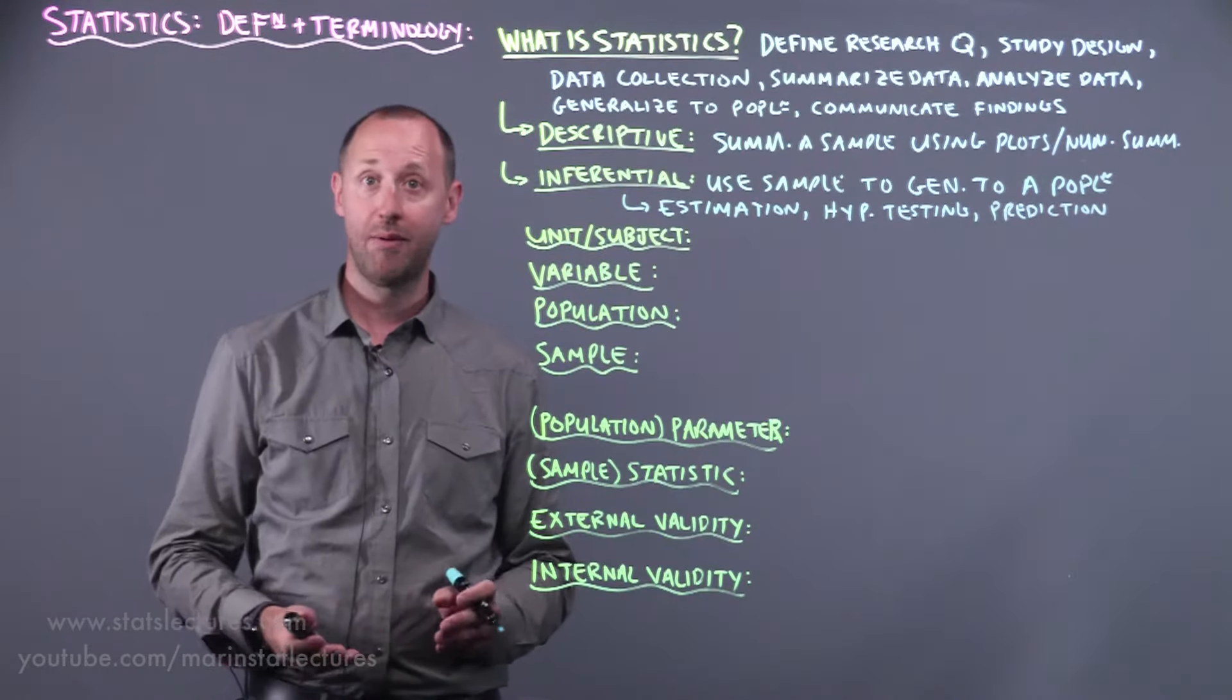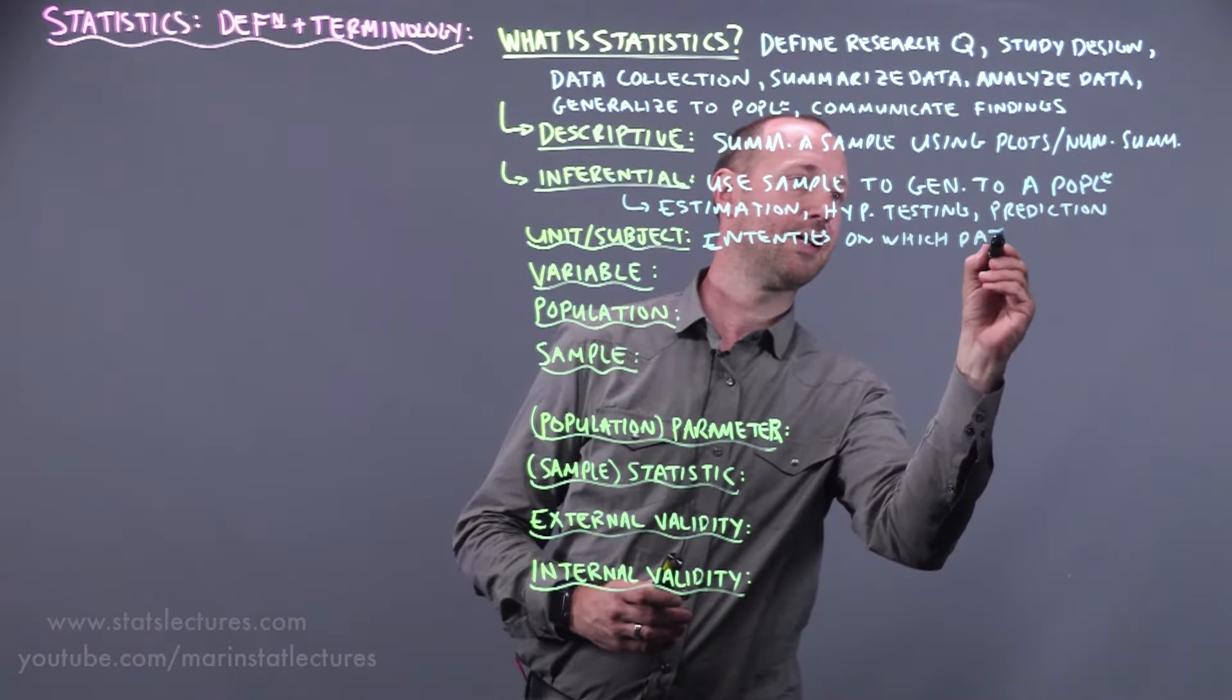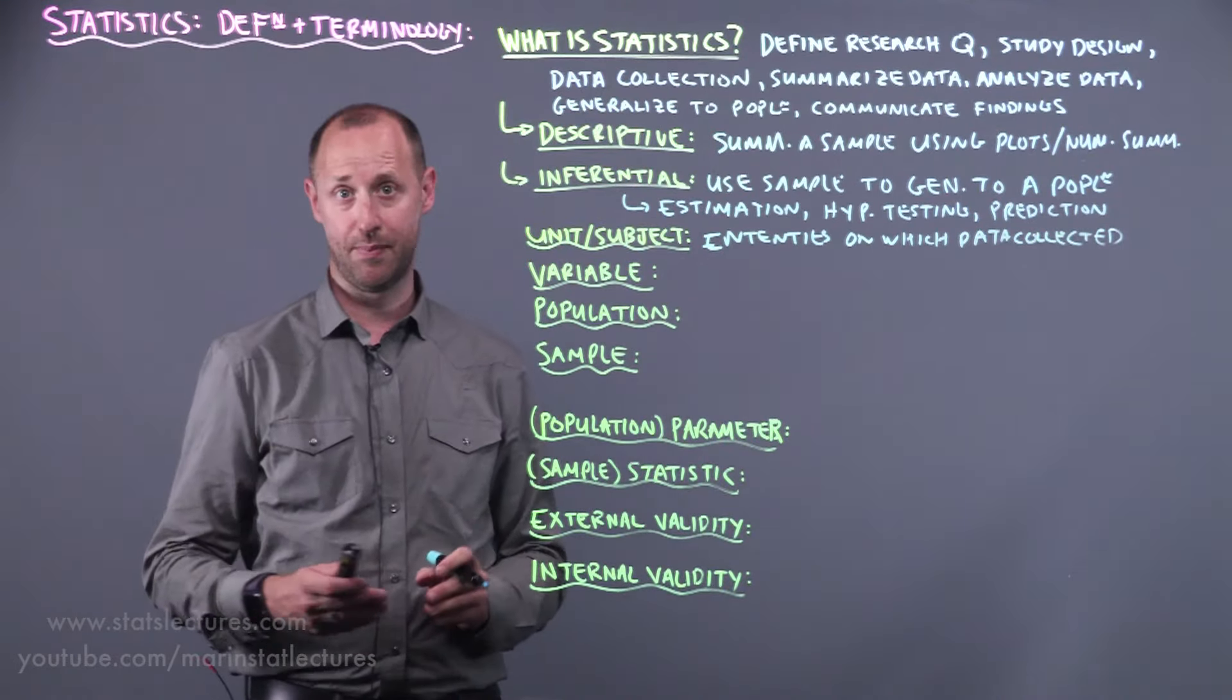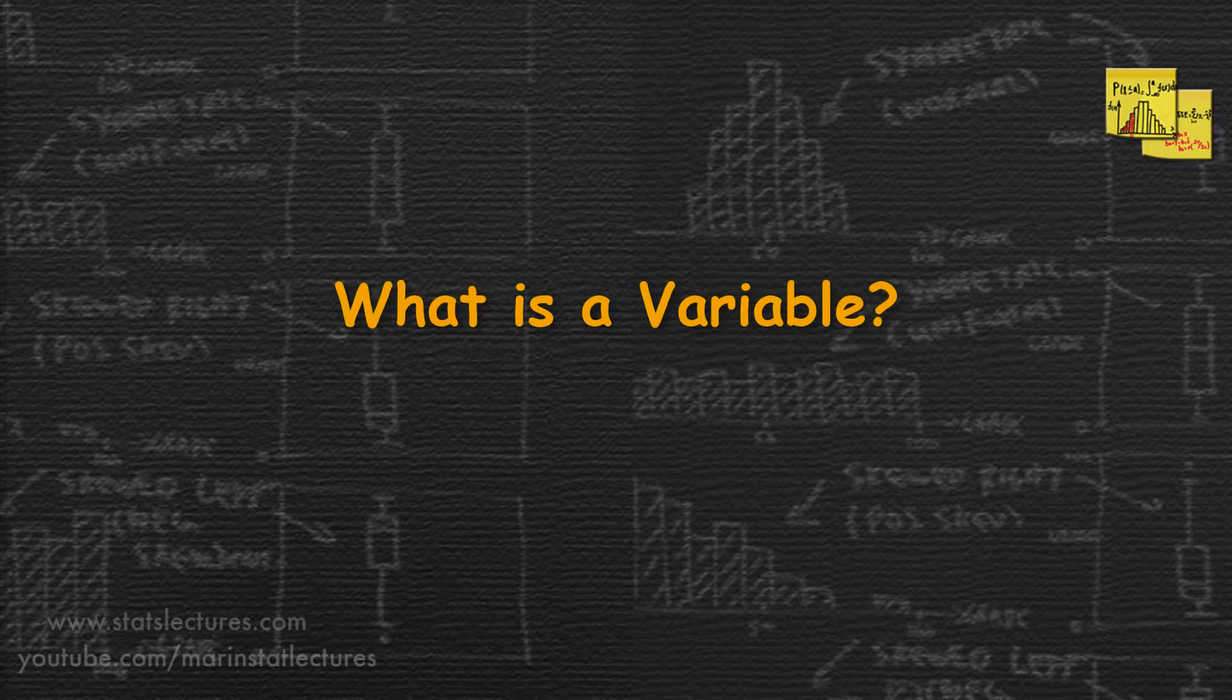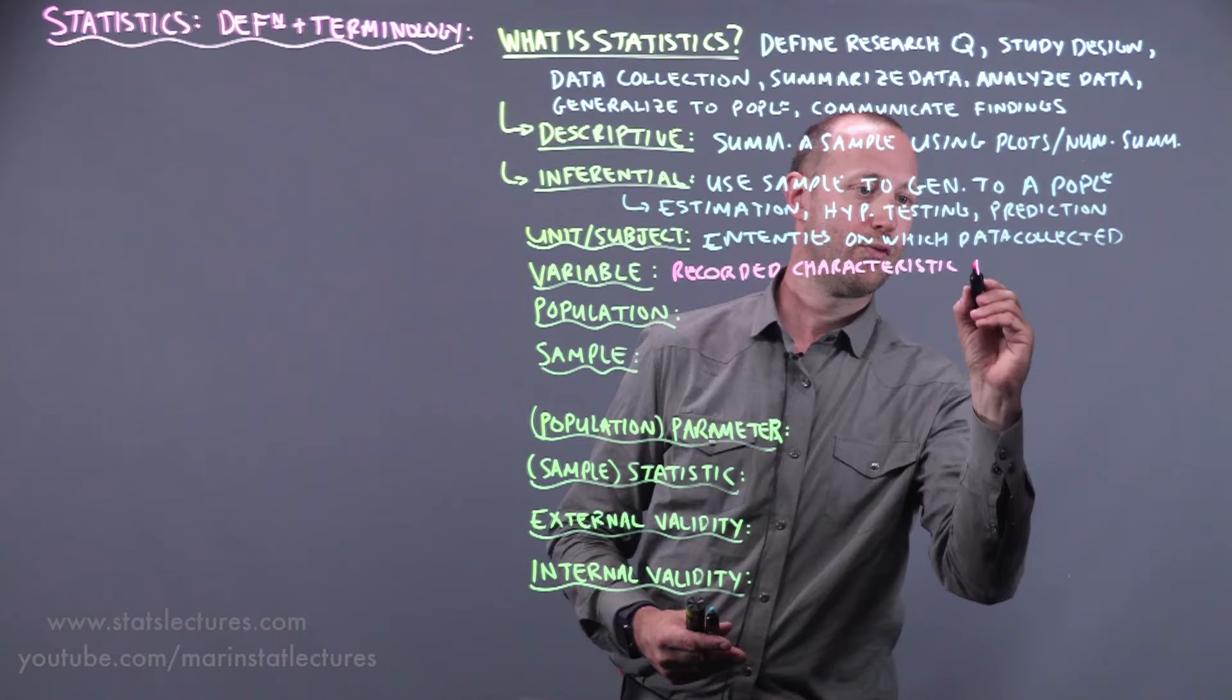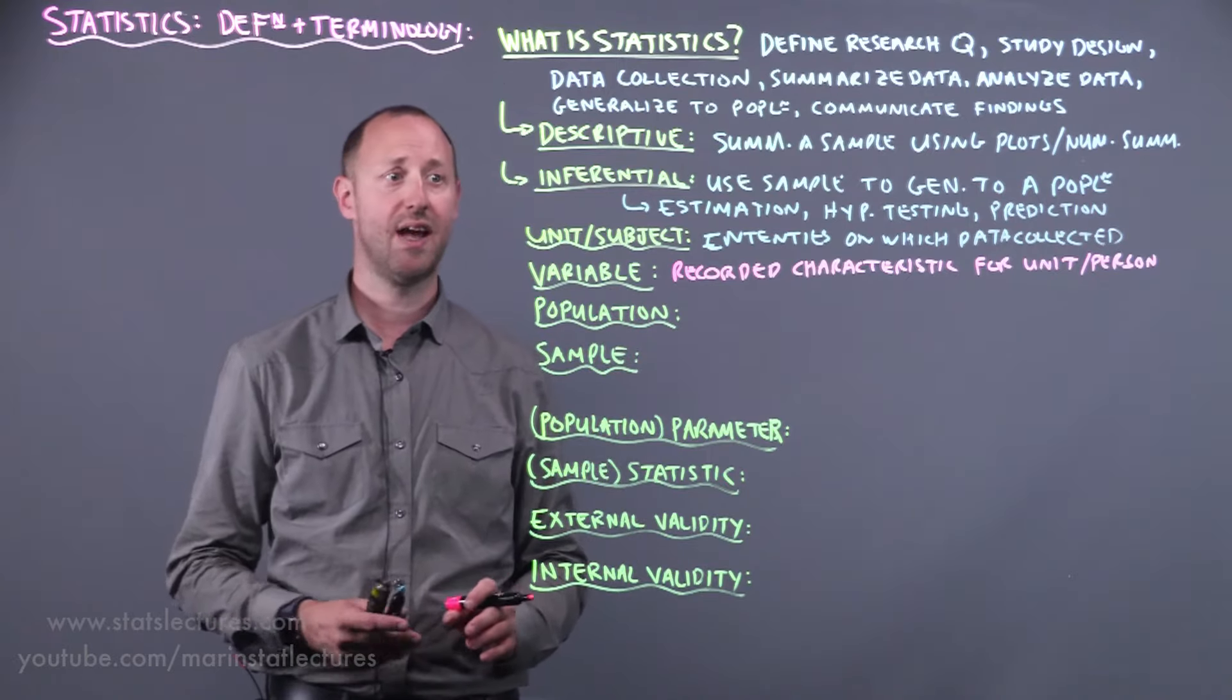So let's define some of the vocabulary that we're going to use as we progress through these ideas. The first is a unit or a subject. These are just the entities on which data is collected. It gets lots of different names: units, subject, sometimes we call them people or individuals if they're people we're looking at. The second is the idea of a variable and this is a recorded characteristic for the unit or for a person. And we have a separate video discussing the different types of variables that we can collect and how to summarize those.